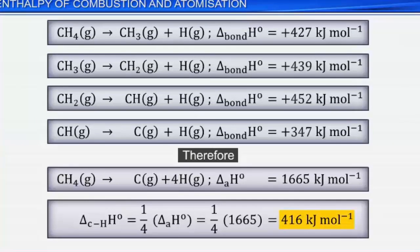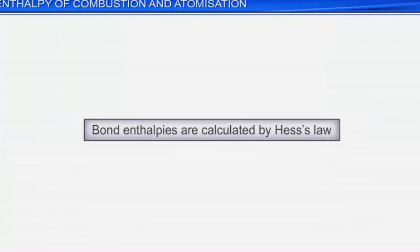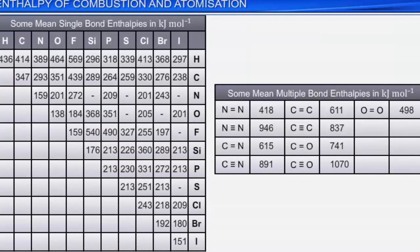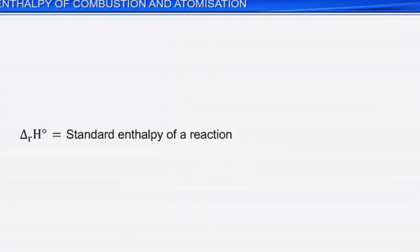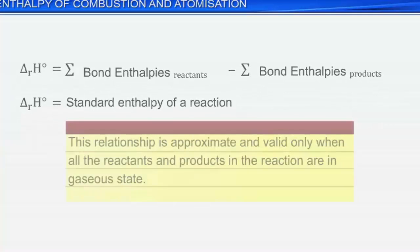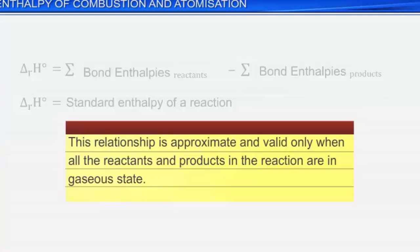Bond enthalpy can be calculated using Hess's law. The knowledge of bond enthalpies helps us in predicting the enthalpy of a reaction in gas phase. The standard enthalpy of a reaction, ΔRH⁰, is equal to the sum of bond enthalpies of reactants minus the sum of bond enthalpies of products. It is important to remember that this relationship is approximate and valid only when all the reactants and products in the reaction are in gaseous state.